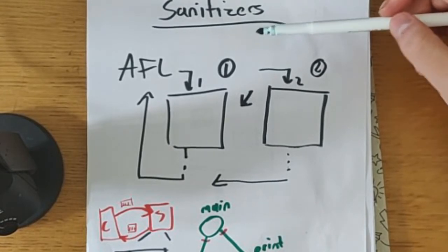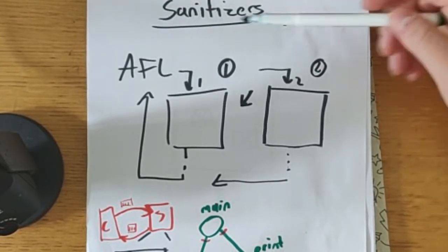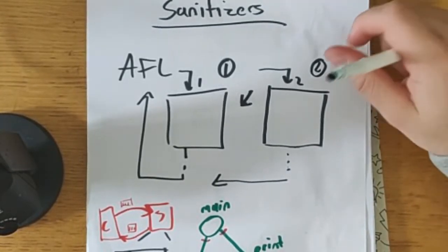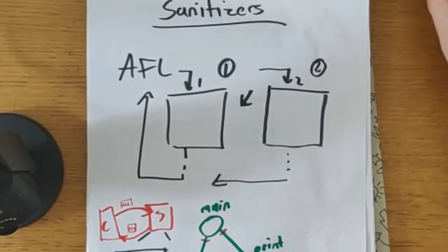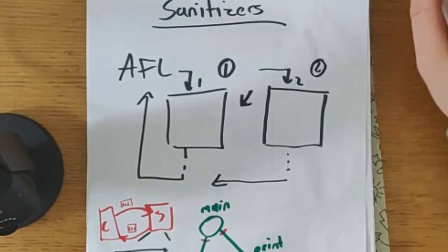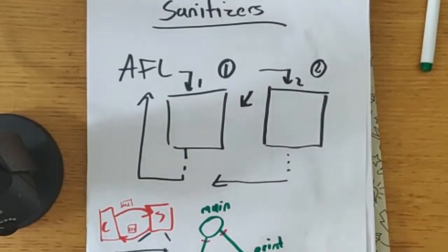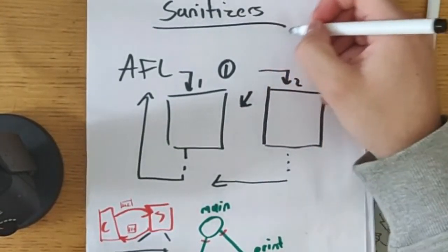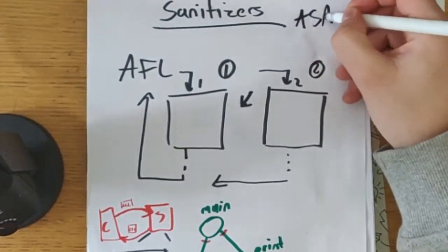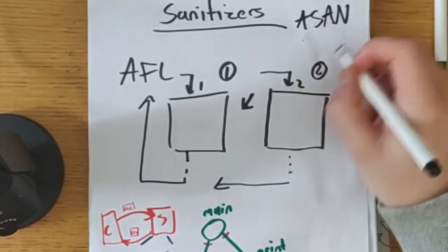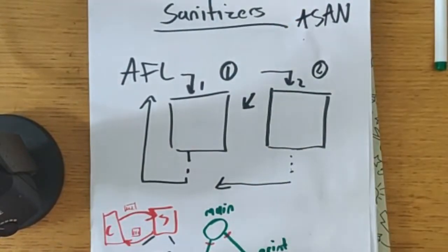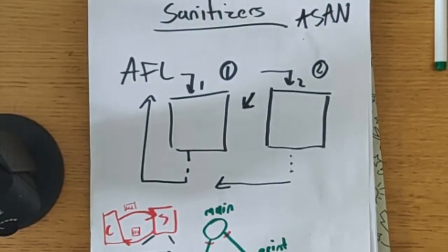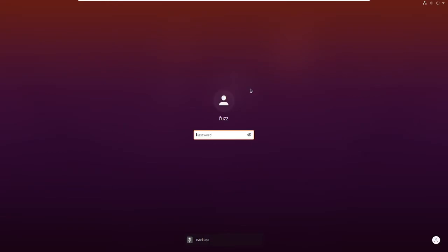That's why things called sanitizers were created — similar to Valgrind. It doesn't just try to detect whether there's a crash; it tries to detect if an error has actually occurred in the program. The big one you see a lot is what's called Address Sanitizer — you'll see it as ASAN — and you can turn this on with the compiler.